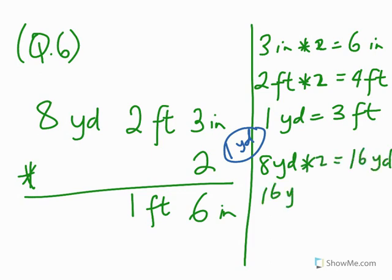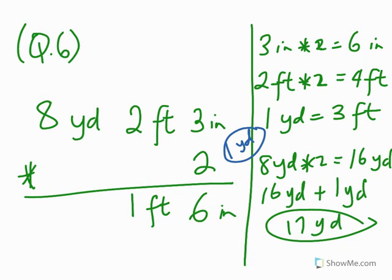Then 16 yards plus 1 yard — I can write this step by step but the video would be long, so write it out as I say it so that it makes more sense to you. So this becomes 17 yards, 1 foot, 6 inches.